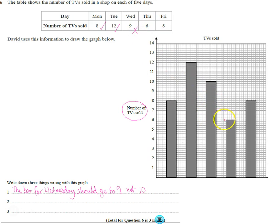Let's just finish checking the bars. Thursday goes to six, and Friday goes to eight. Yeah, so we're all good. Just one thing wrong.